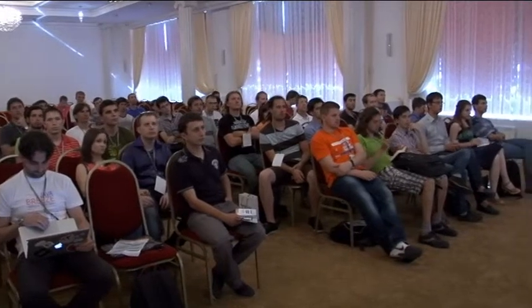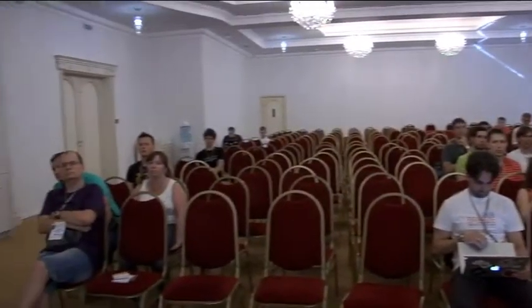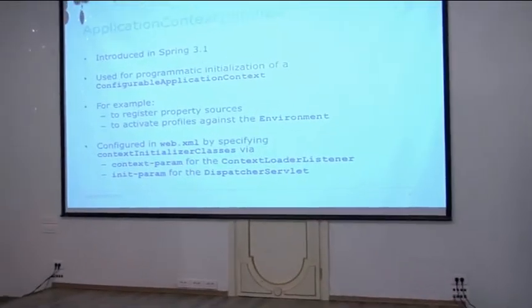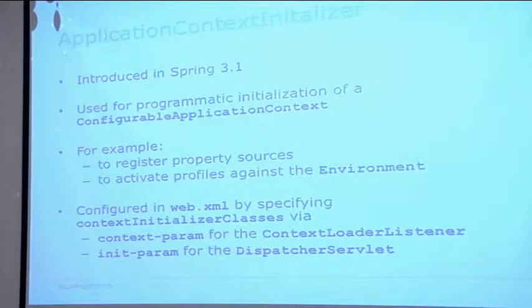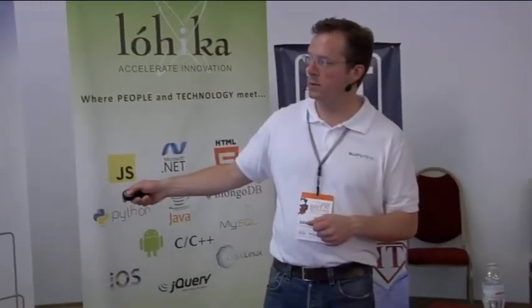The ApplicationContextInitializer interface was introduced in Spring 3.1. It allows you to programmatically initialize or configure your application context instance — typically to register custom property sources or activate certain profiles against the environment. Normally this is done for a web application using Spring MVC, and there is first-class support in web.xml for the context initializer: you can specify a context-param named 'contextInitializerClasses' with fully-qualified class names of classes implementing ApplicationContextInitializer.